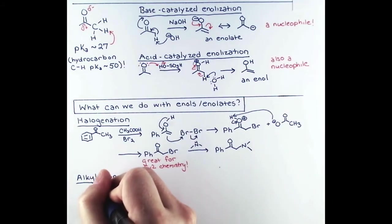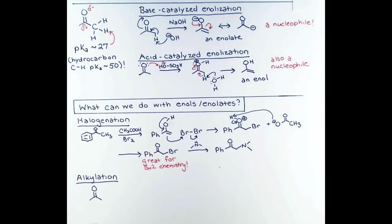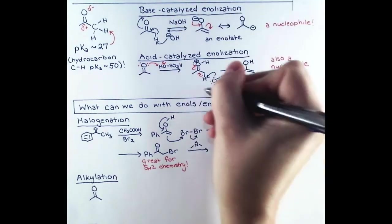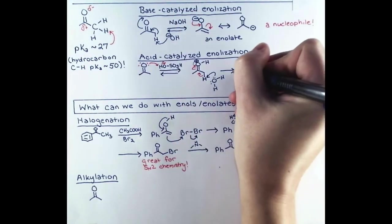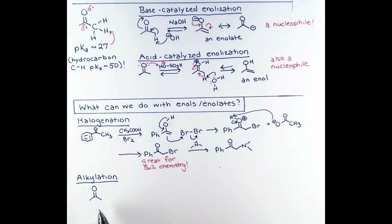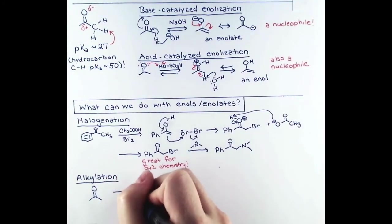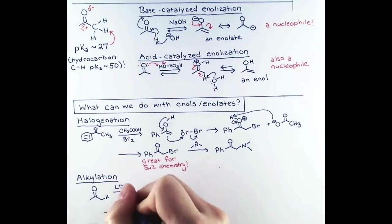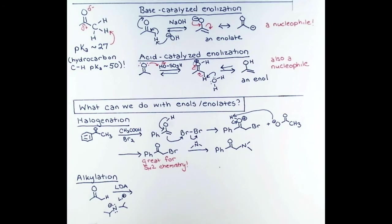To show this alkylation reaction, I'm going to first deprotonate acetone to form an enolate. Now we need a little bit of fancier chemistry here. The enolate and enol forming reactions that I've shown above are actually in equilibrium when made with NaOH or sulfuric acid. But to make this alkylation reaction proceed with any sort of control, we're going to need some fancier chemistry here. We're going to use lithium diisopropyl amide, or LDA, to generate this enolate completely.